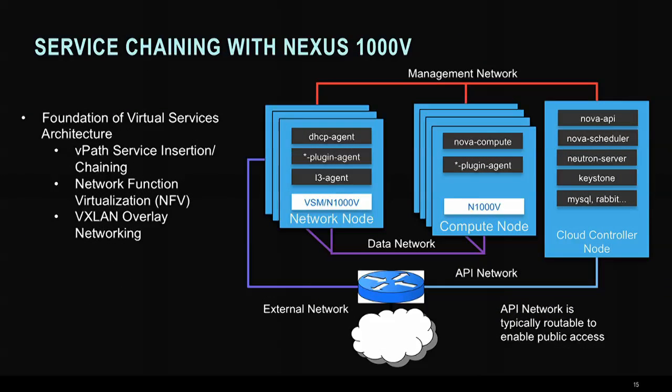The Nexus 1000 is also very nice because you can do service chaining today. We're working with the Neutron group to define Layer 4 through 7 service chaining services, and while the standard is being defined, you can actually implement that today with the Nexus 1000 through VPath. It's also very nice for VXLAN overlay-based functionality, letting you get around the 4,000 VLAN limitation and enabling a nice data center interconnect technology.